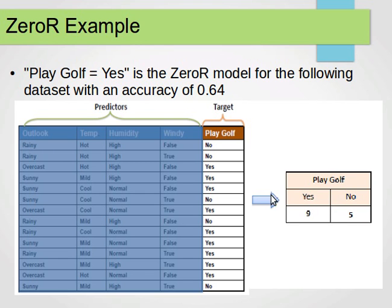So we have nine yeses and five noes. We have 14 instances or 14 observations, as you can see. And now for any future input, it will always be guessed to be of type yes or of class yes.